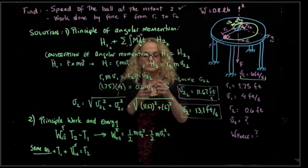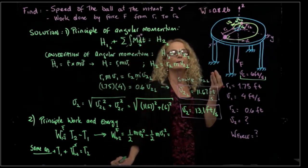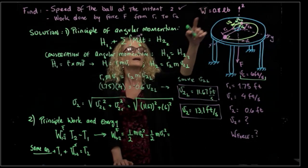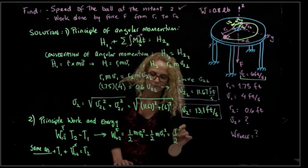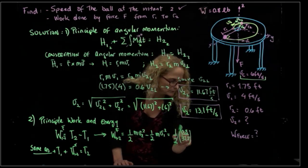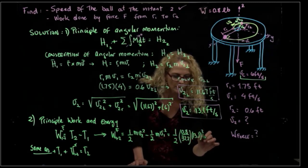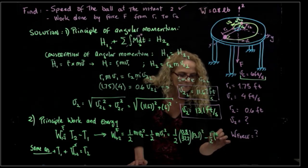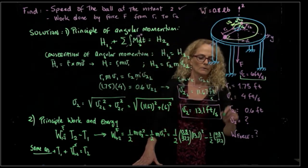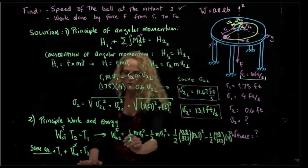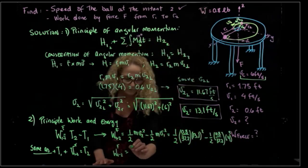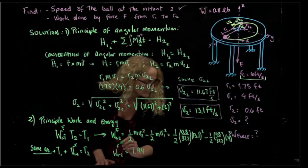In British units, weight is the base unit and mass is a derived unit, so mass equals weight divided by gravity. The work done equals one-half times (0.8 / 32.2) times 13.1 squared, minus one-half times (0.8 / 32.2) times 4 squared. Calculating these values, the work done by the force between positions 1 and 2 equals 1.94 foot-pounds.